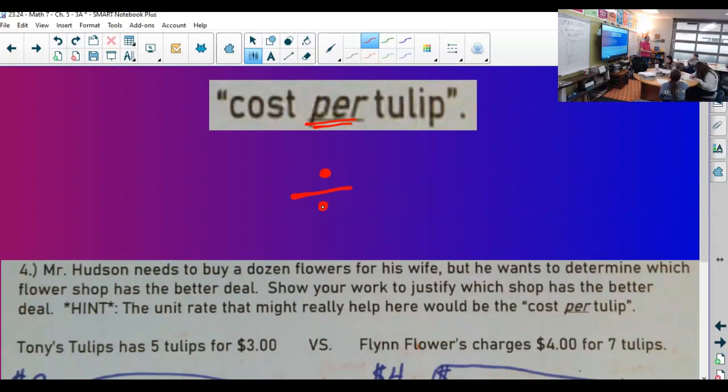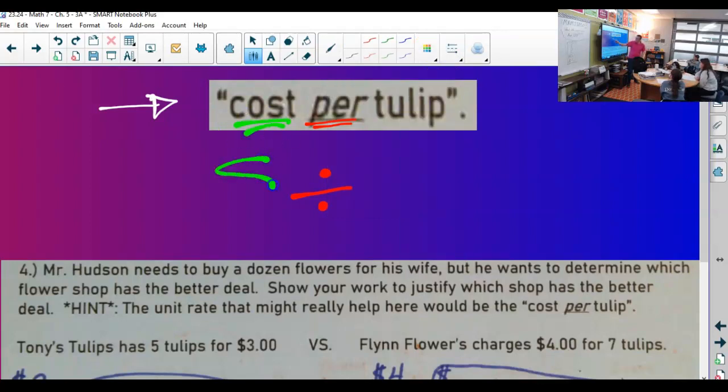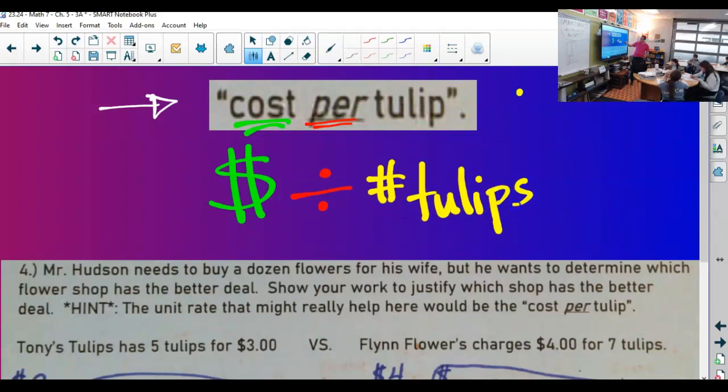So cost per tulip, you know there's division happening. Now why do you figure out there's division happening? The problem is, in English we read left to right. In math, we also go left to right. So what comes before the division? The cost. Cost divided by the number of tulips.